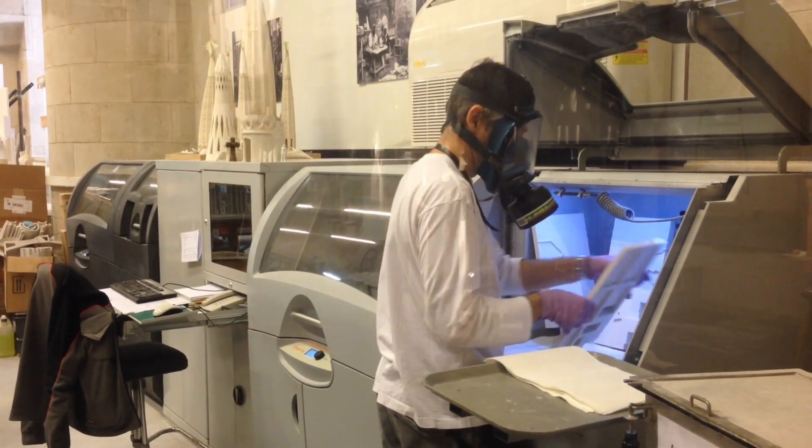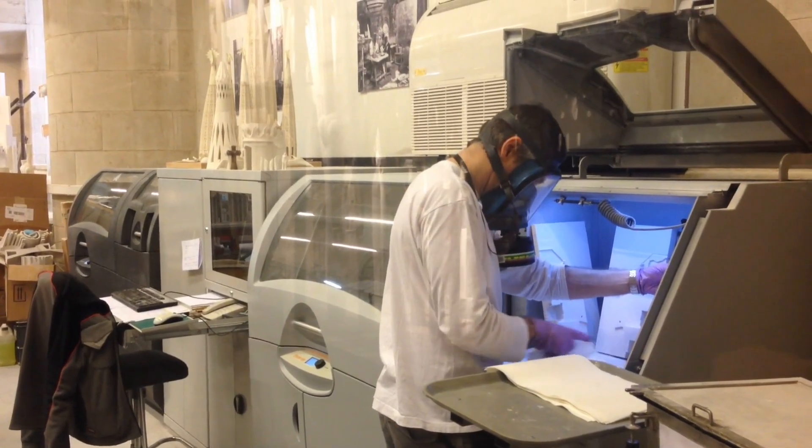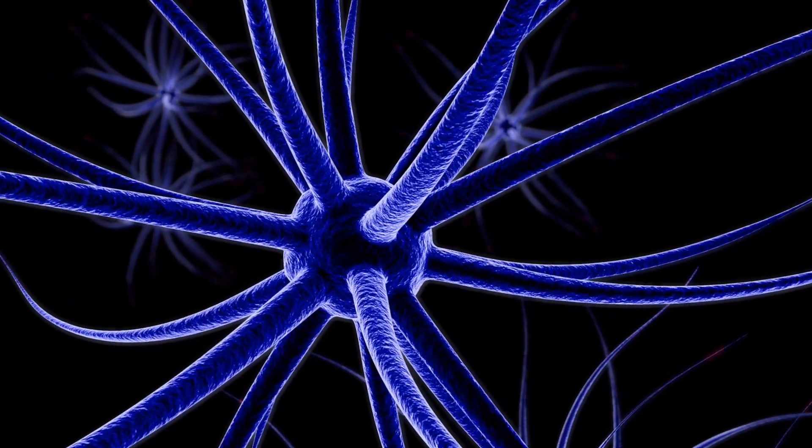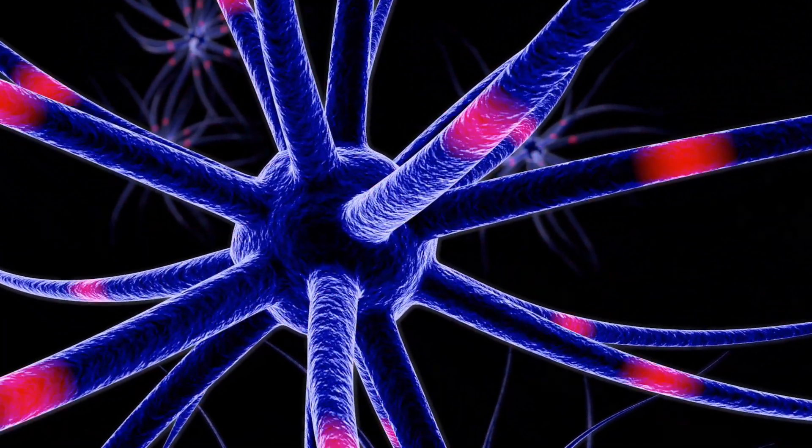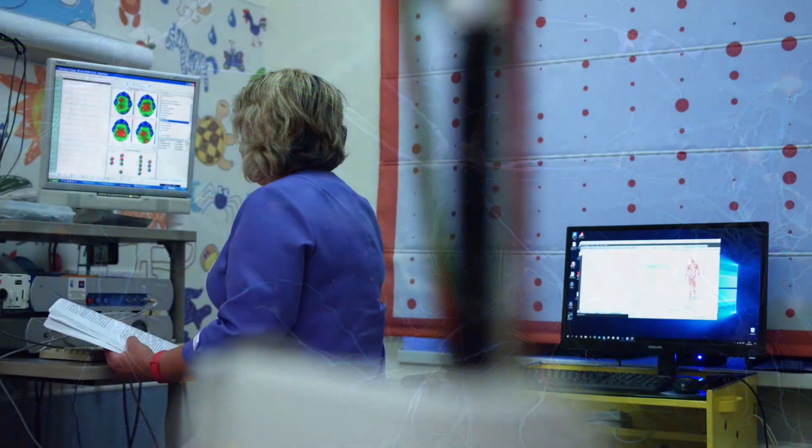Some of these studies did find interesting features in Einstein's brain, including a greater density of neurons in some parts of the brain and a higher-than-usual ratio of glial cells that help neurons transmit nerve impulses to neurons.